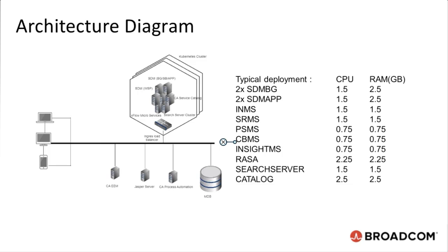This architectural diagram provides an overview of the CA Service Management solution deployment with out-of-box requirements for each server. It is specific to a typical test environment deployment, and the values of these resources can be customized as per one's requirement. On the left-hand side of the diagram, notice that each component is in the form of a cluster in Kubernetes. Xflow Microservices, CA Service Catalog, Service Desk Manager, Web Screen Painter, and Search Server clusters are all kept within the Kubernetes cluster.